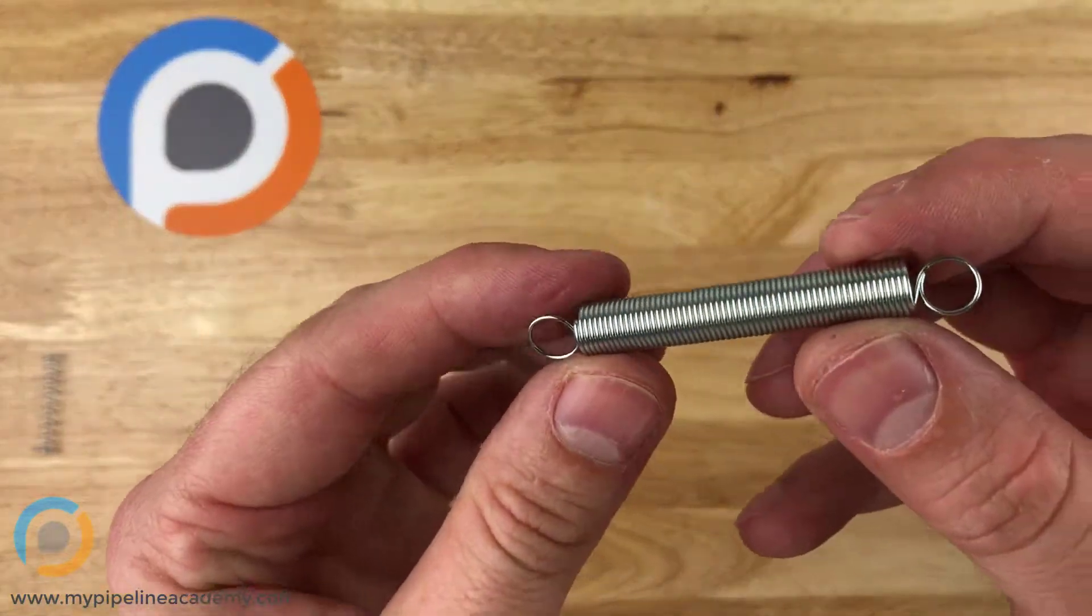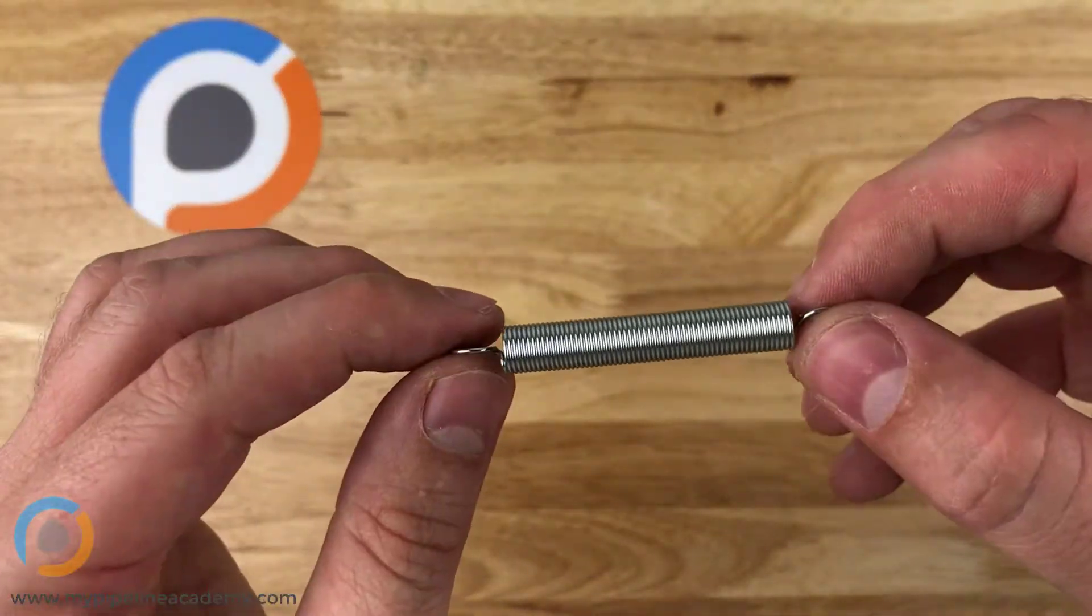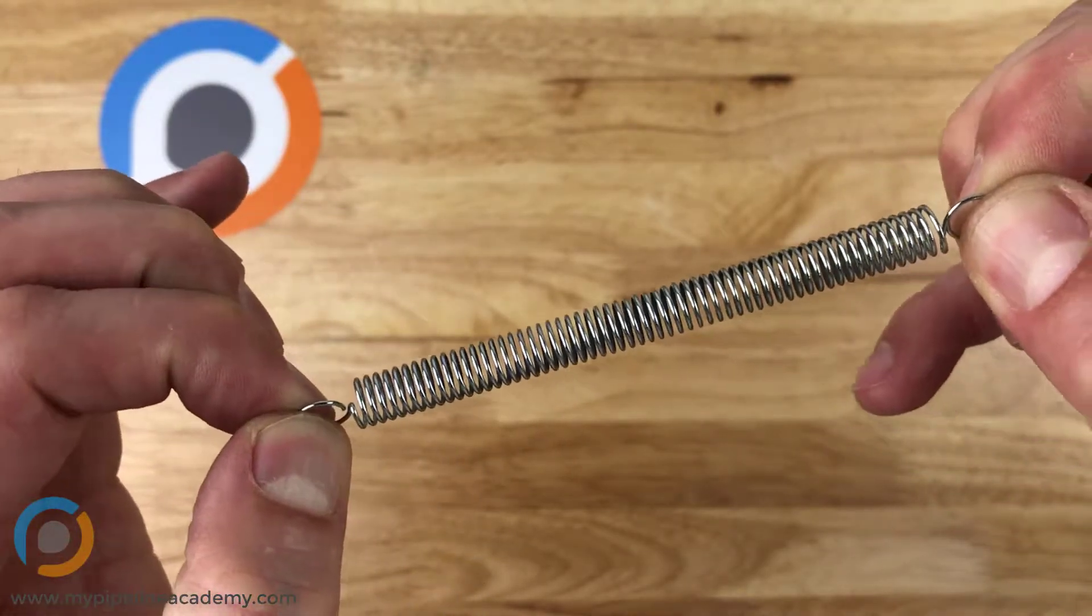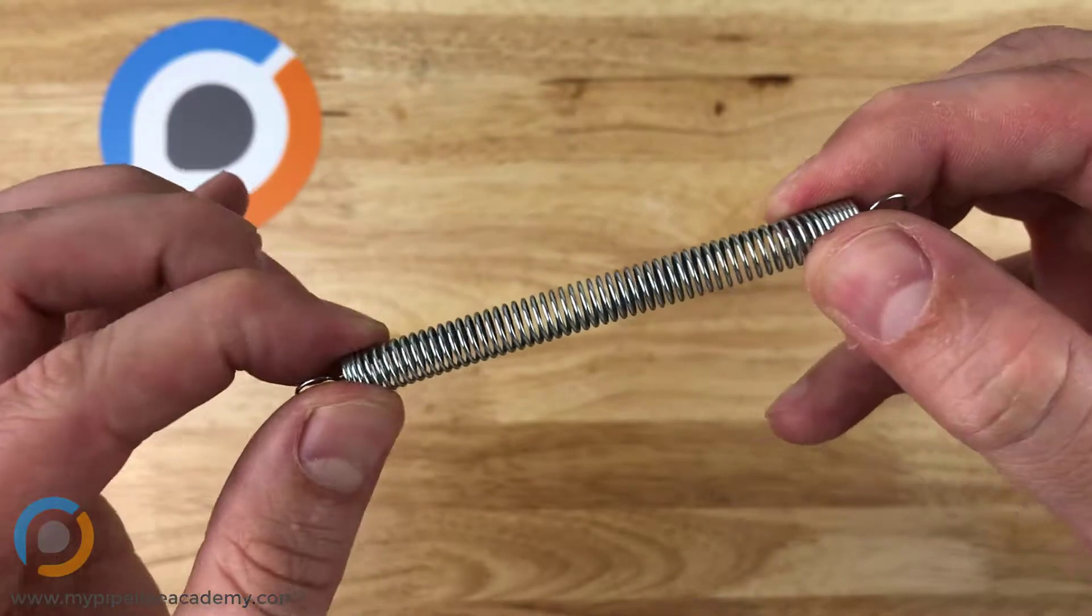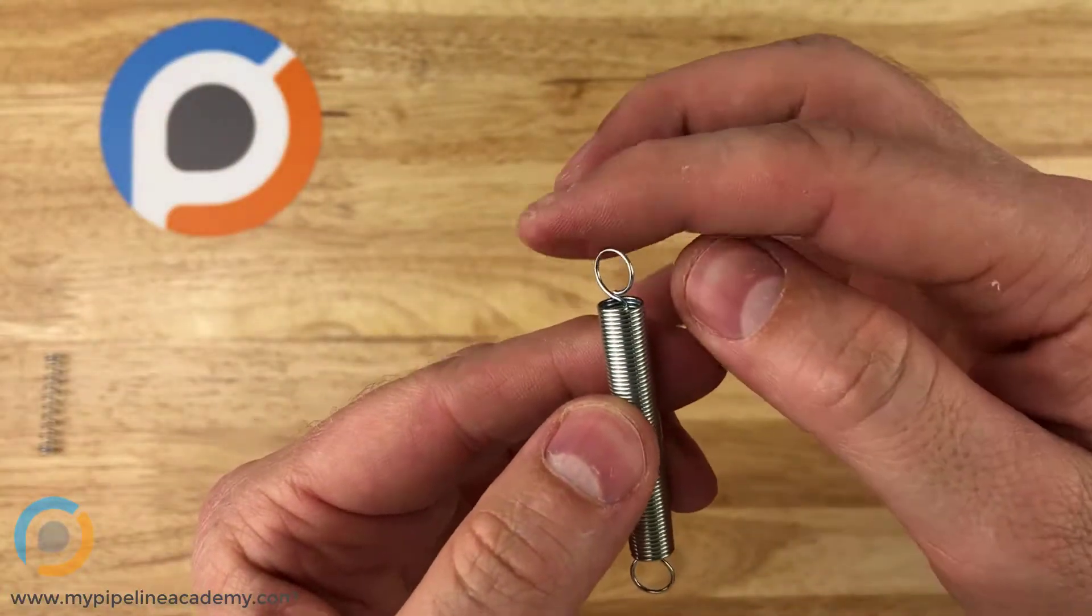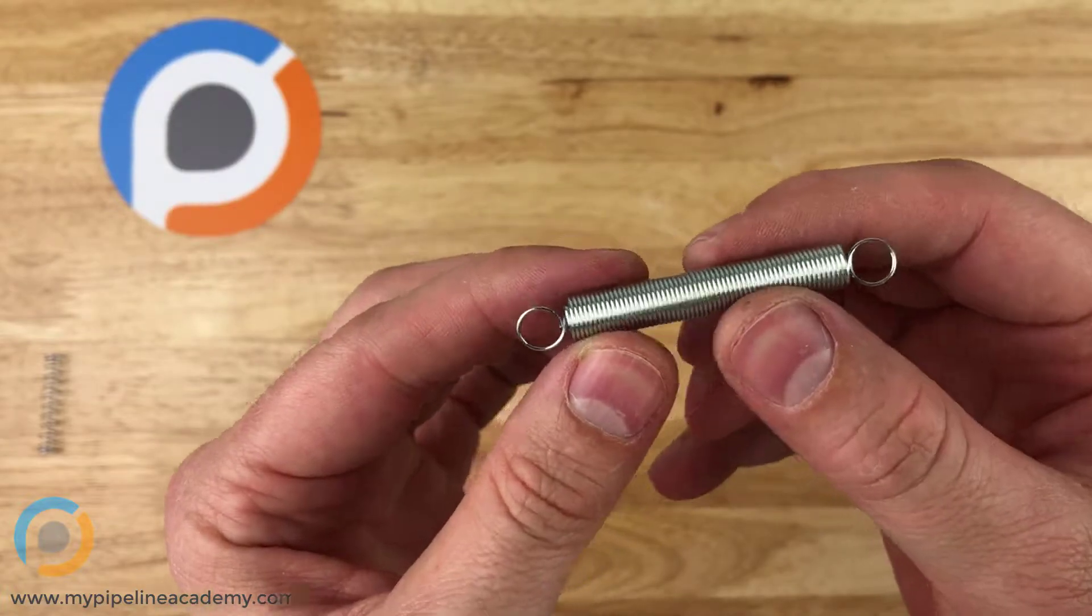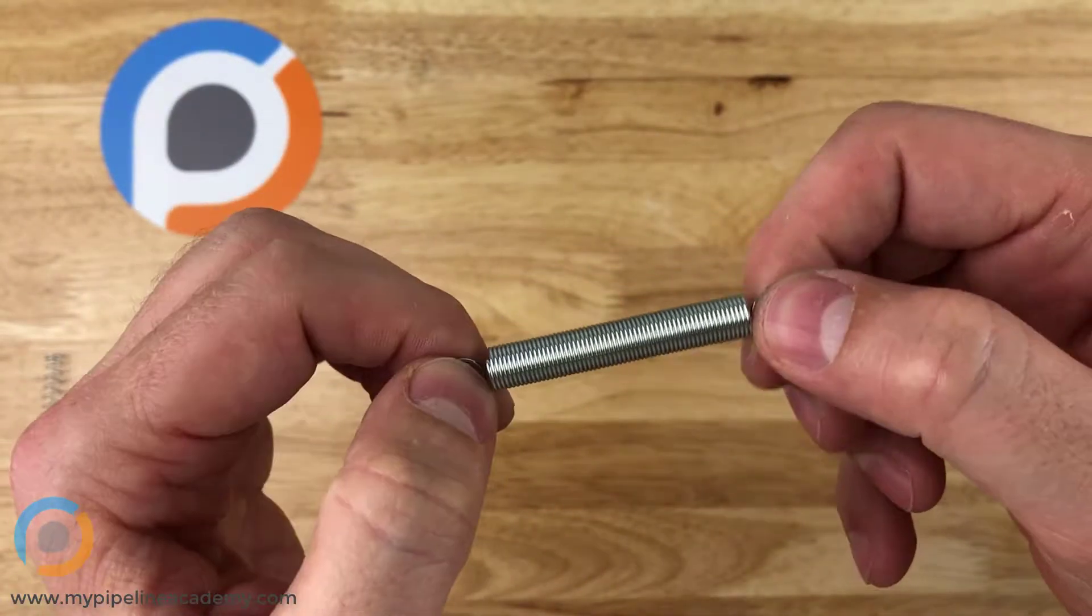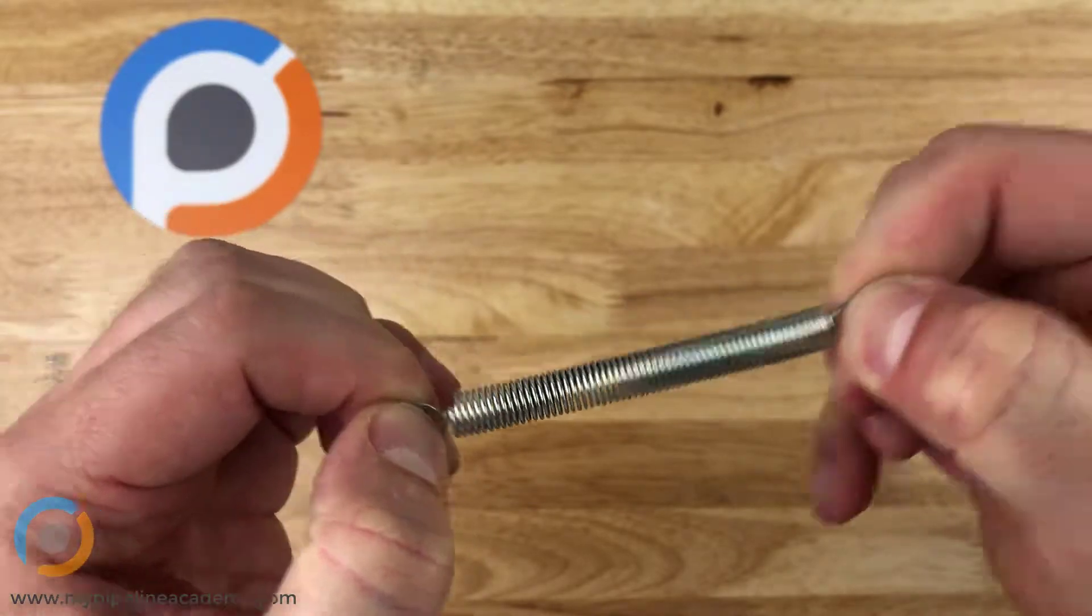Then we have here an extension spring, called an extension spring because you extend it in order to put energy into it and then it contracts. Extension springs have these loops at the end so you can loop them around something. You might have a dowel pin on this end and maybe a screw goes through on this end and you can pull them apart like that.